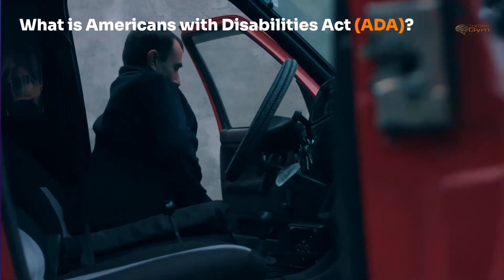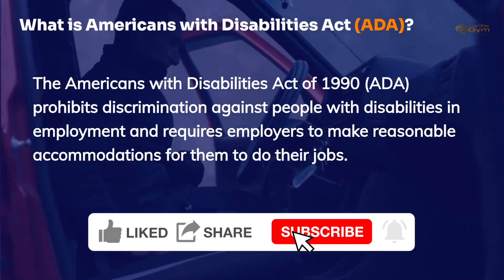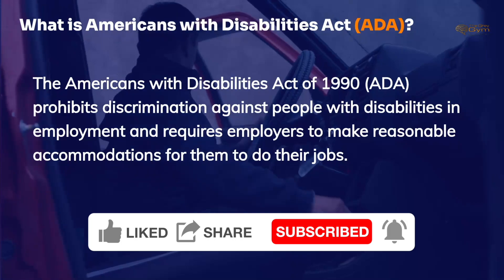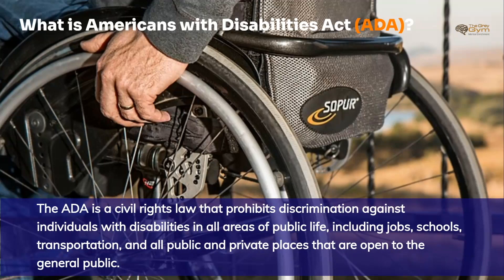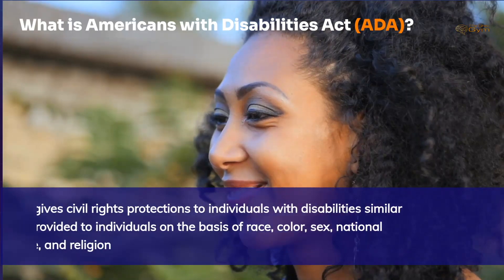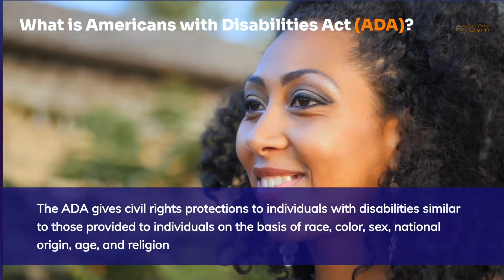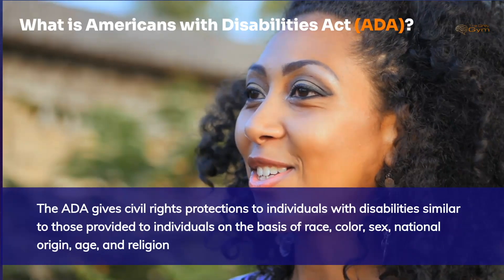What is the Americans with Disabilities Act, or ADA? The Americans with Disabilities Act of 1990 prohibits discrimination against people with disabilities in employment and requires employers to make reasonable accommodations for them to do their jobs. The ADA is a civil rights law that prohibits discrimination against individuals with disabilities in all areas of public life including jobs, schools, transportation, and all public and private places that are open to the general public. The purpose of this law is to make sure that people with disabilities have the same rights and opportunities as everyone else. The ADA gives civil rights protections to individuals with disabilities similar to those provided to individuals on the basis of race, color, sex, national origin, age, and religion.